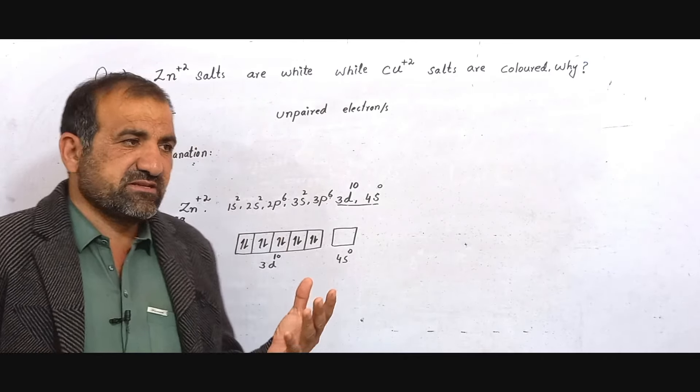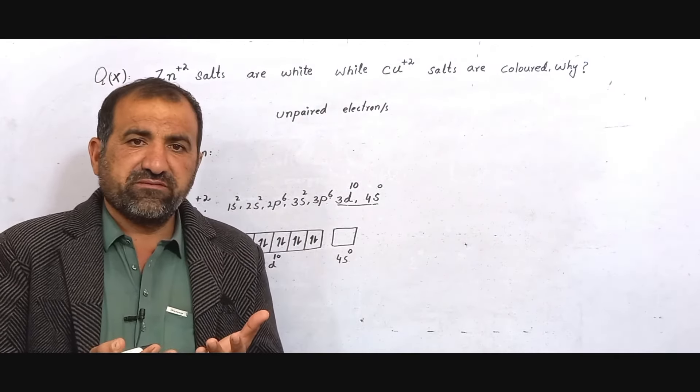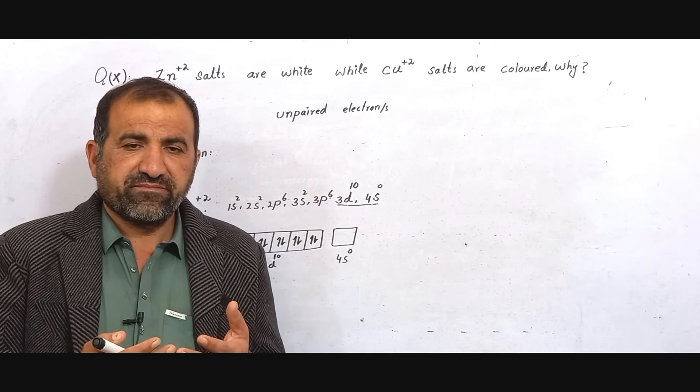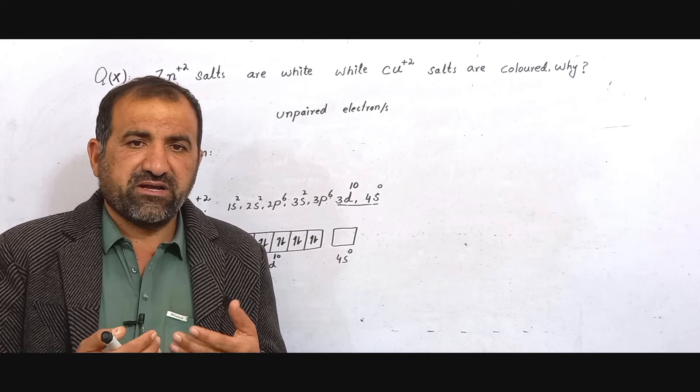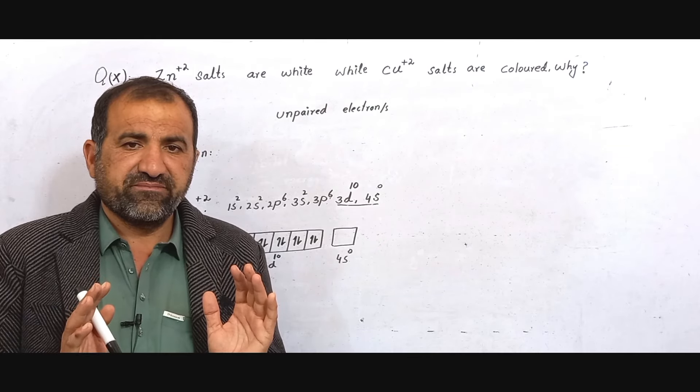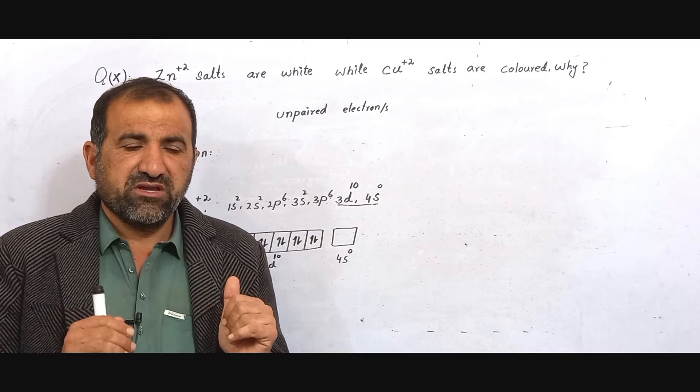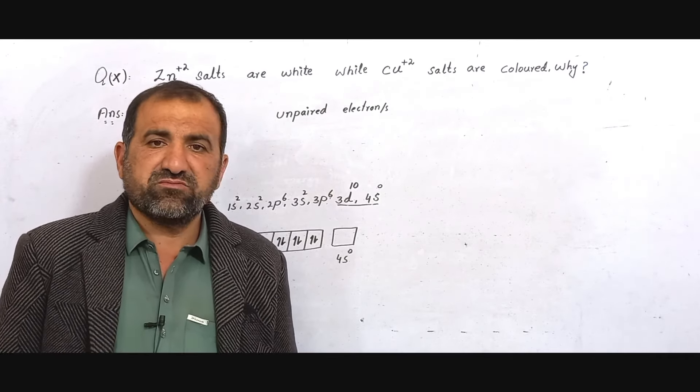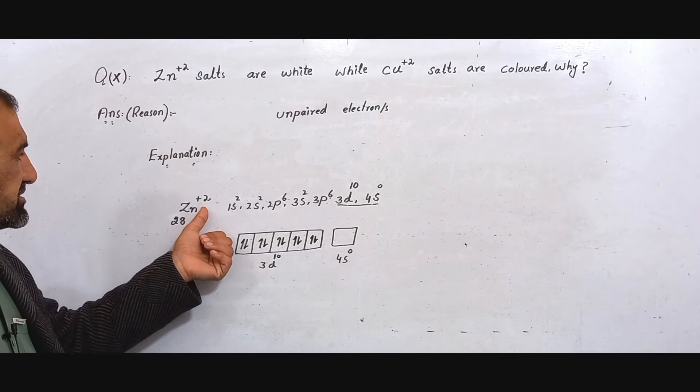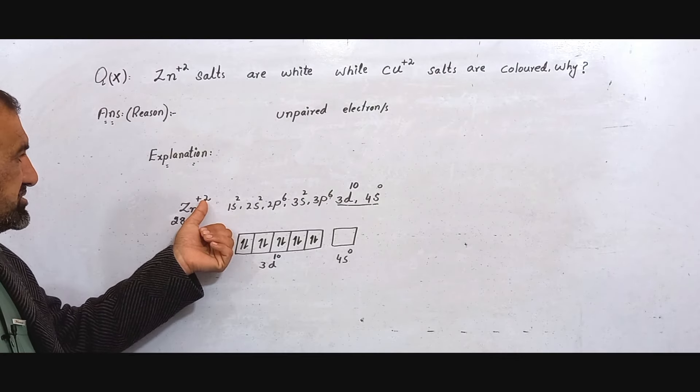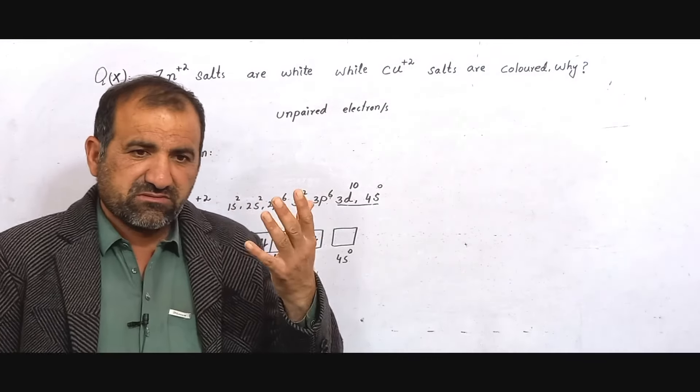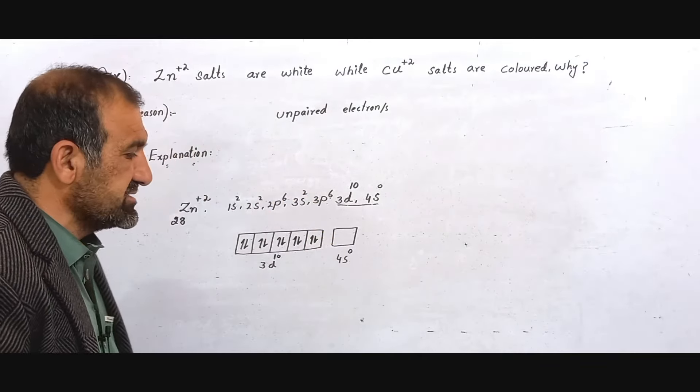Because there are no unpaired electrons, when visible light falls on Zn²⁺, it cannot absorb any color. All colors pass through without absorption, so no complementary color appears. Therefore it will appear colorless white to our eyes. Having no unpaired electrons, Zn²⁺ shows colorless white.